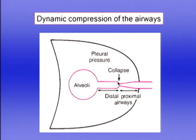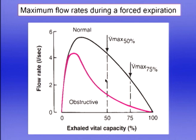As expiration continues, the collapse point moves distally because airway resistance increases at lower lung volumes, so pressure is lost more rapidly from the alveoli toward the mouth. Therefore the further we are down the flow-volume curve, the more we're reflecting very small airways. For example, the maximal flow rate after 75% of vital capacity has been exhaled looks specifically at very small airways toward the end of forced expiration.